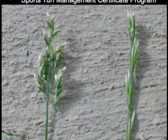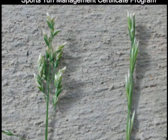The seed heads on a grass plant can also be used as an identifying characteristic. In this picture, the seed head of poa annua on the left is called a panicle, while a seed head of perennial ryegrass on the right is called a spike.